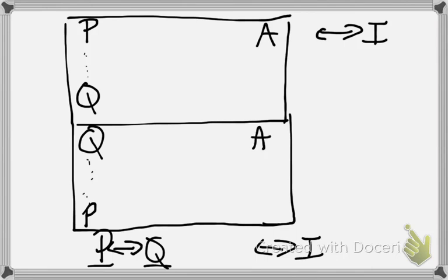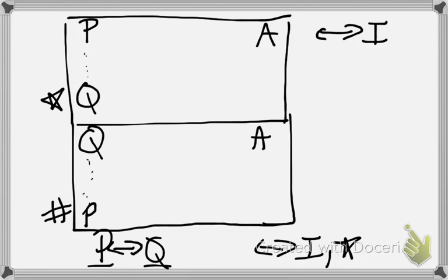The lines we cite in the rule of biconditional introduction are: first, the line that contains the derivation of the right-hand side of the biconditional, and then the line that contains the derivation of the left-hand side of the biconditional.